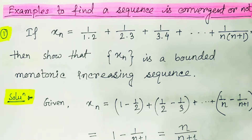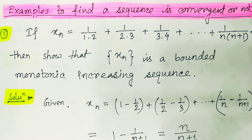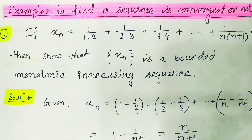Hello everybody, now it is the time to solve some examples to find out whether a given sequence is convergent or not. So let us directly start with the first example: xn equals 1/(1·2) + 1/(2·3) + 1/(3·4) + ... and the nth term is 1/(n·(n+1)).